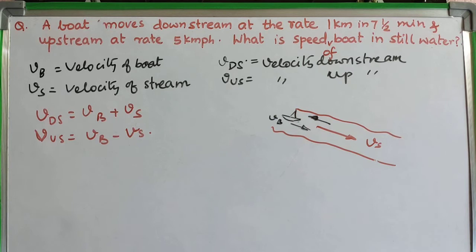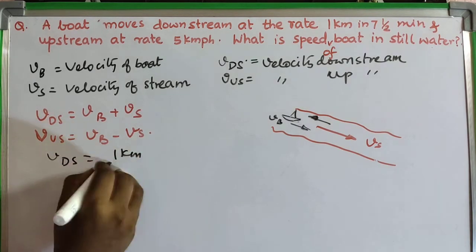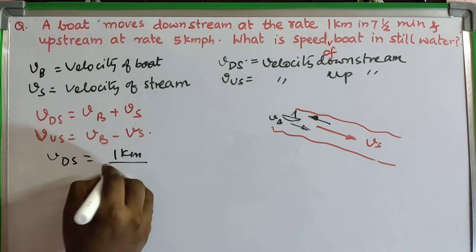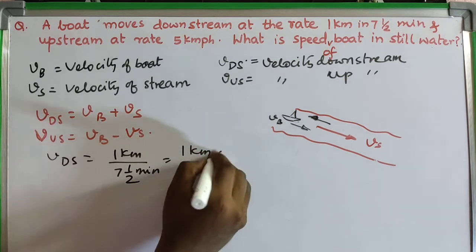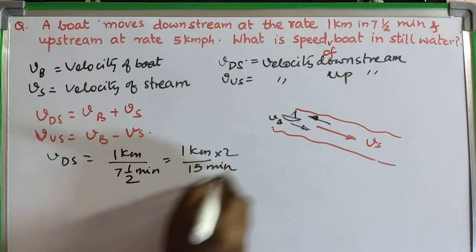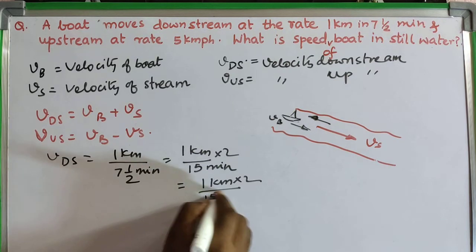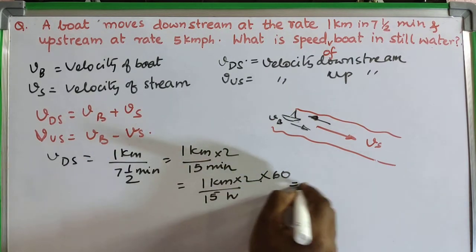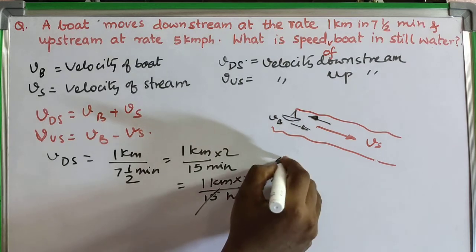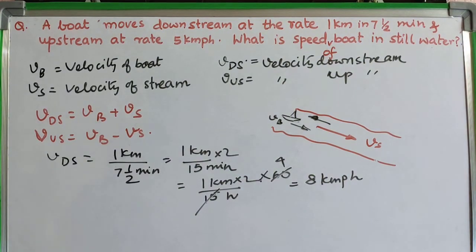Now let's solve the problem. The boat moves at the rate of one kilometer in seven and a half minutes downstream. So VDS equals distance divided by time, which is one kilometer divided by 7.5 minutes. Seven and a half minutes is 15 by 2 minutes. Converting to hours: one kilometer divided by 15/2 divided by 60, which gives 8 kilometers per hour.